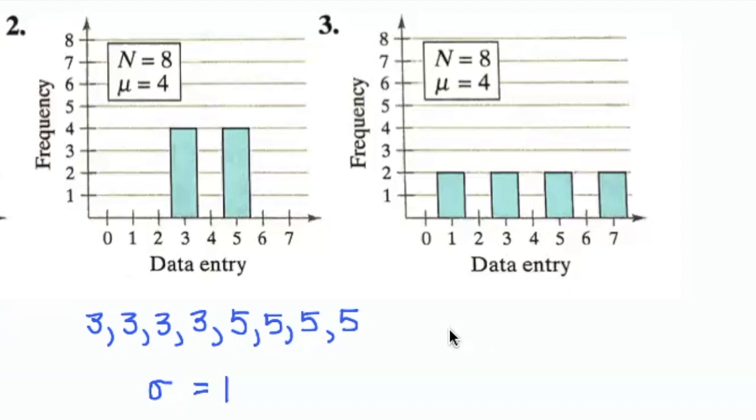Now in this last data set, this represents having 2 1s, 2 3s, 2 5s, and 2 7s. So this would be our data set. The mean is still located at 4.